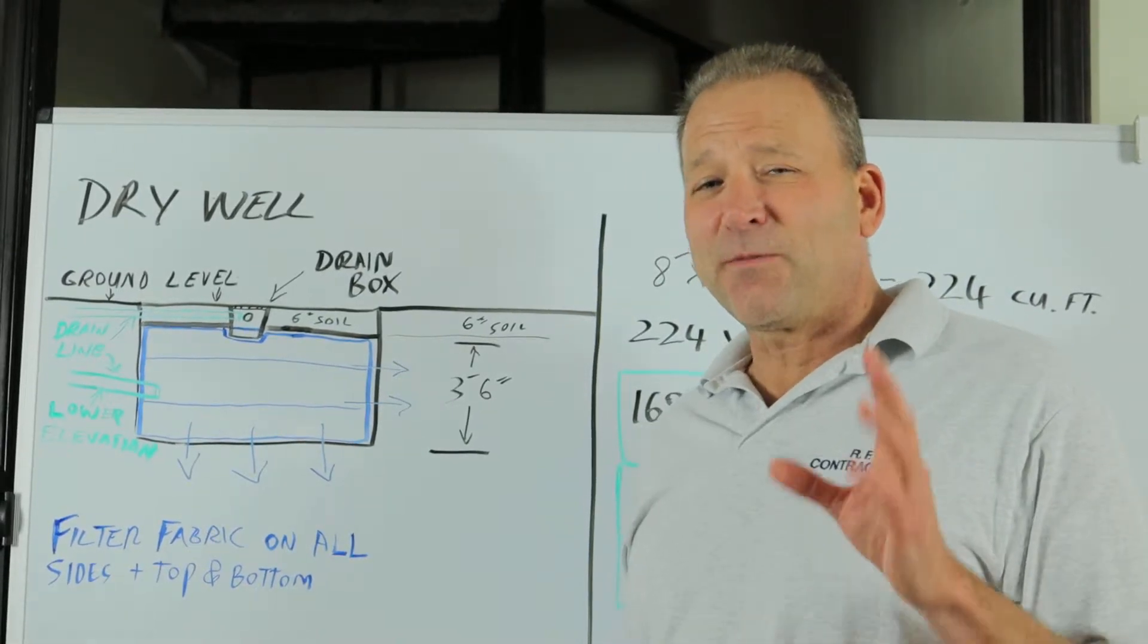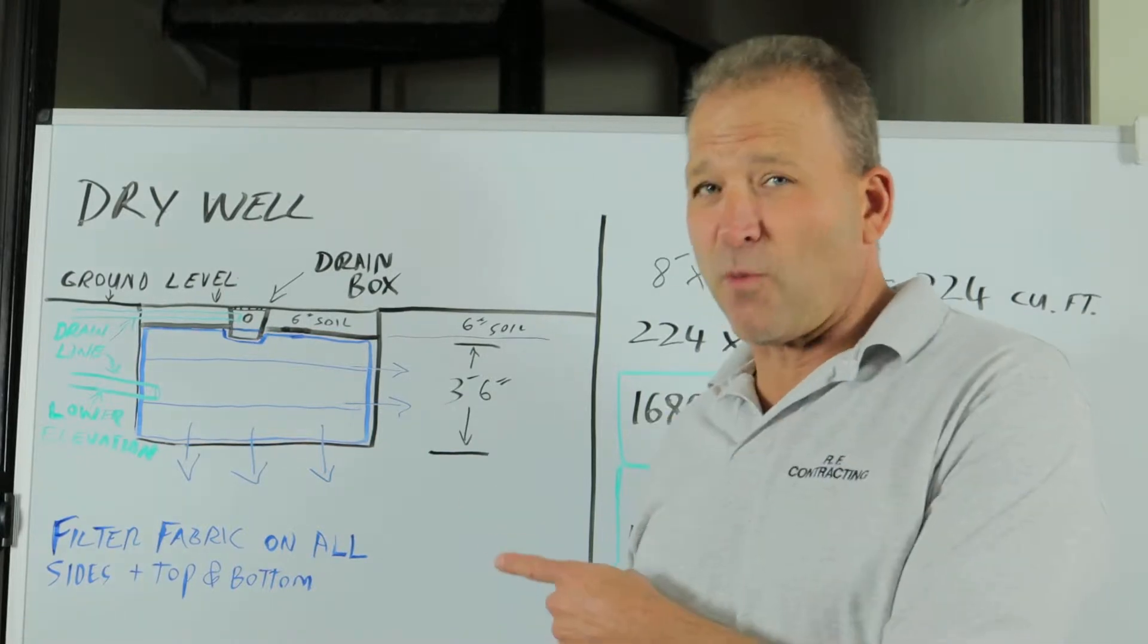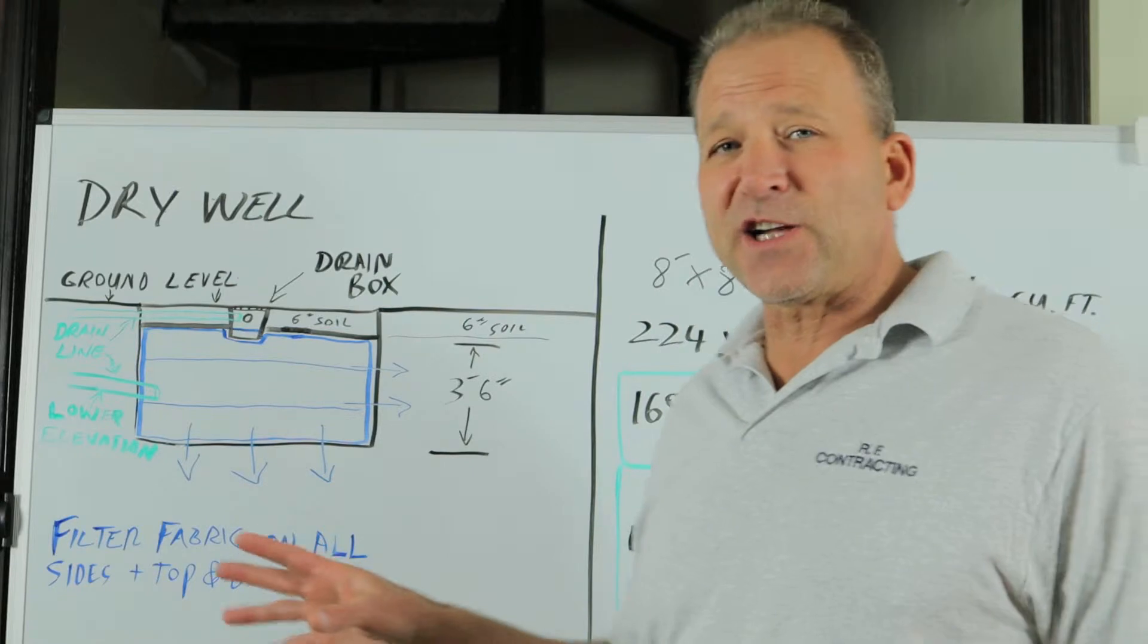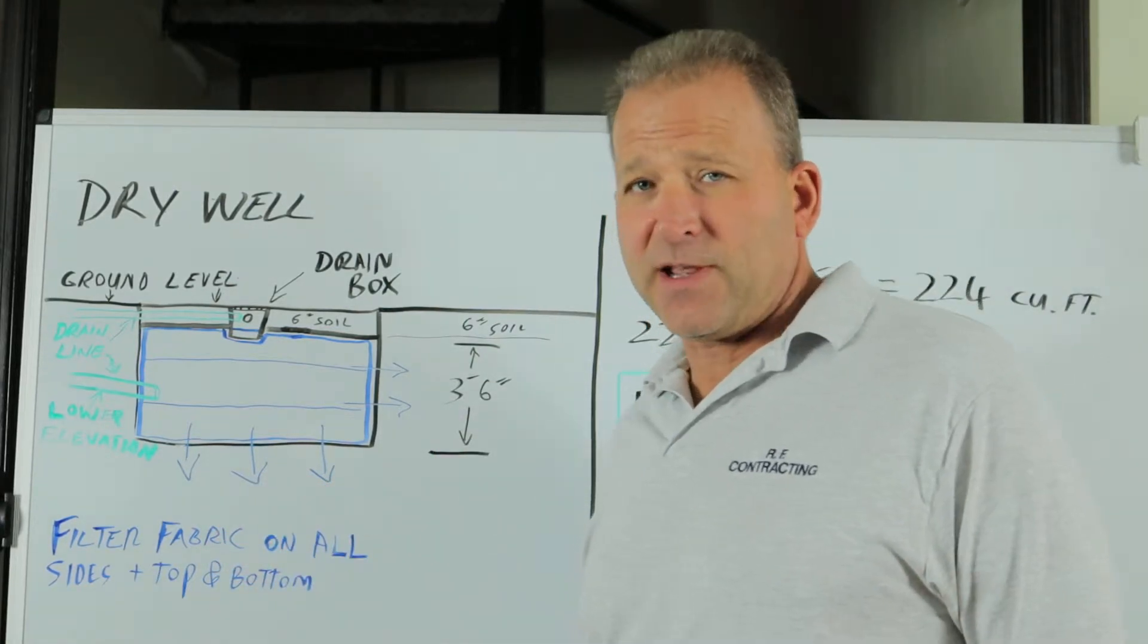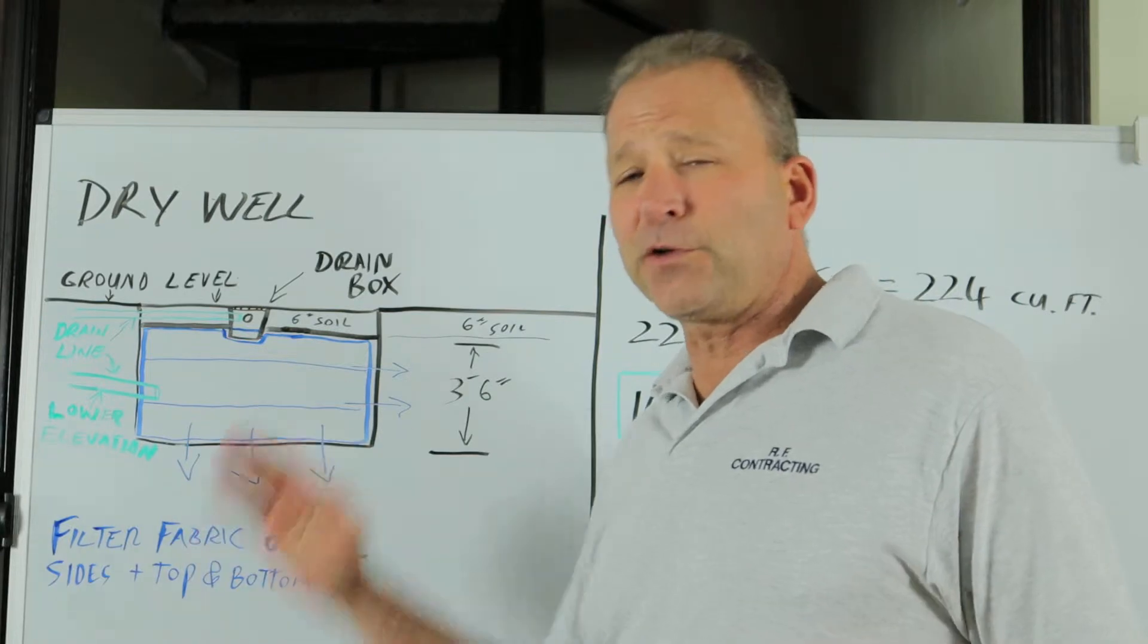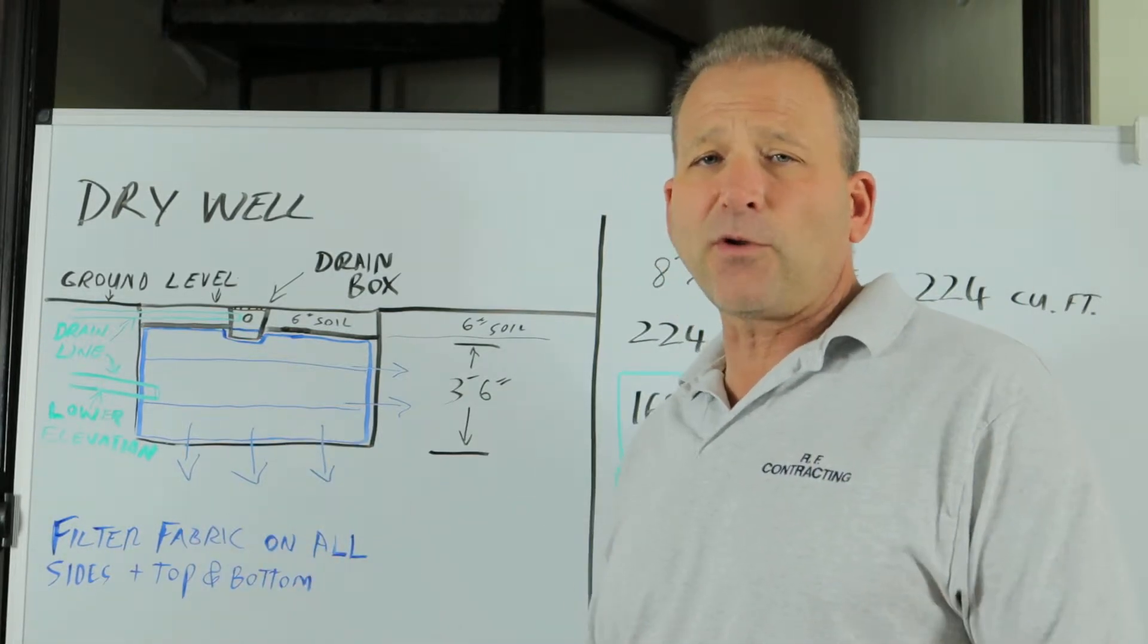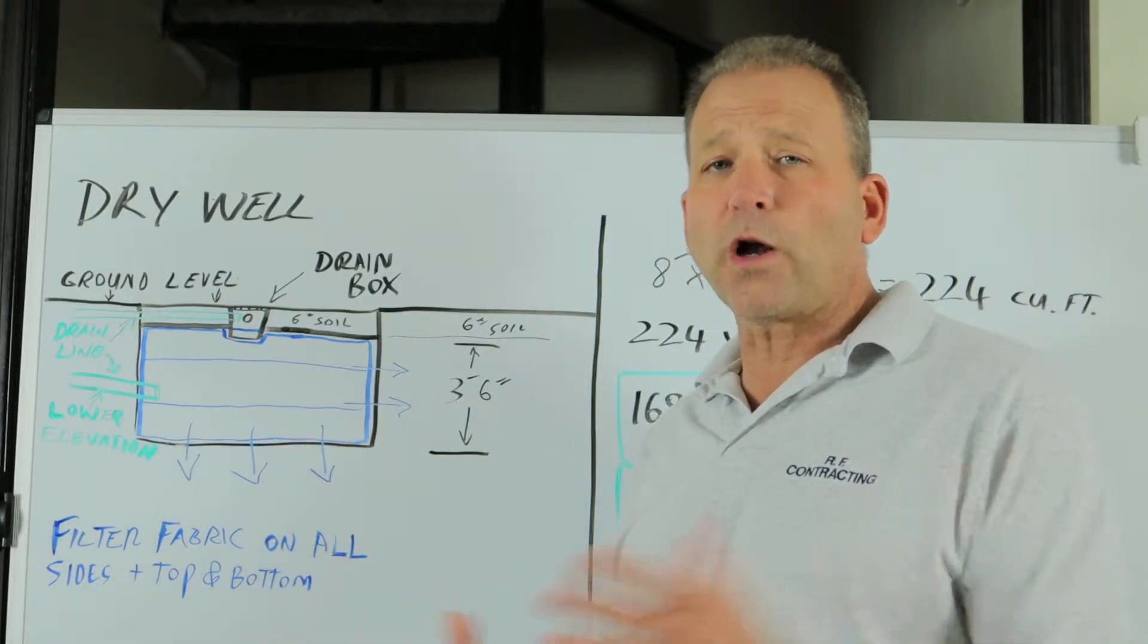Hi I'm Rich Fidlow from RF Contracting and today we're going to talk about dry wells. On the board we have an illustration of a dry well—it's a hole in the ground. You line that hole with filter fabric on all sides plus top and bottom, fill it with clean gravel, and the voids between the stone provide your gallon capacity for holding water.